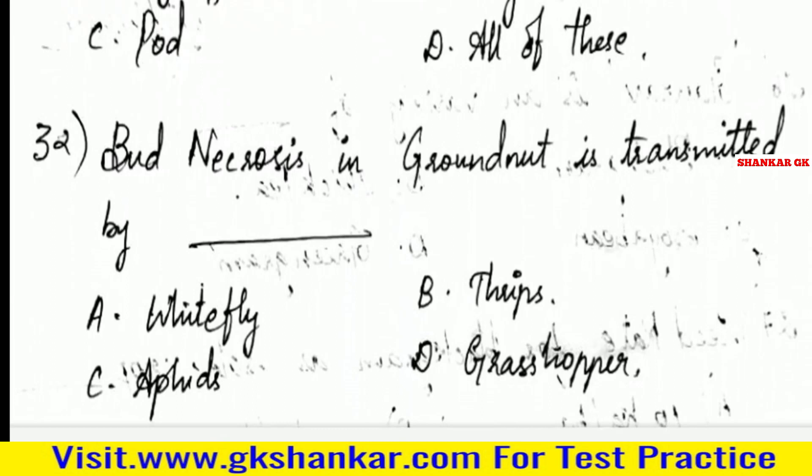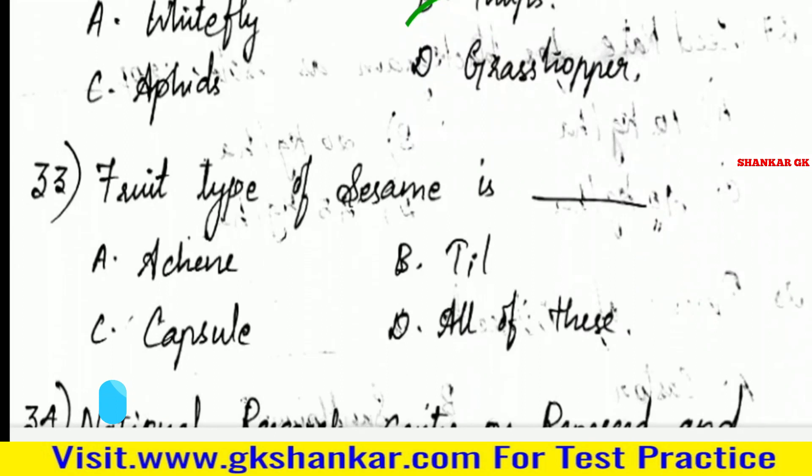Thirty-first question: Bud necrosis in groundnut is transmitted by — A. Whitefly, B. Thrips, C. Aphids, D. Grasshopper. Answer: B. Thrips.